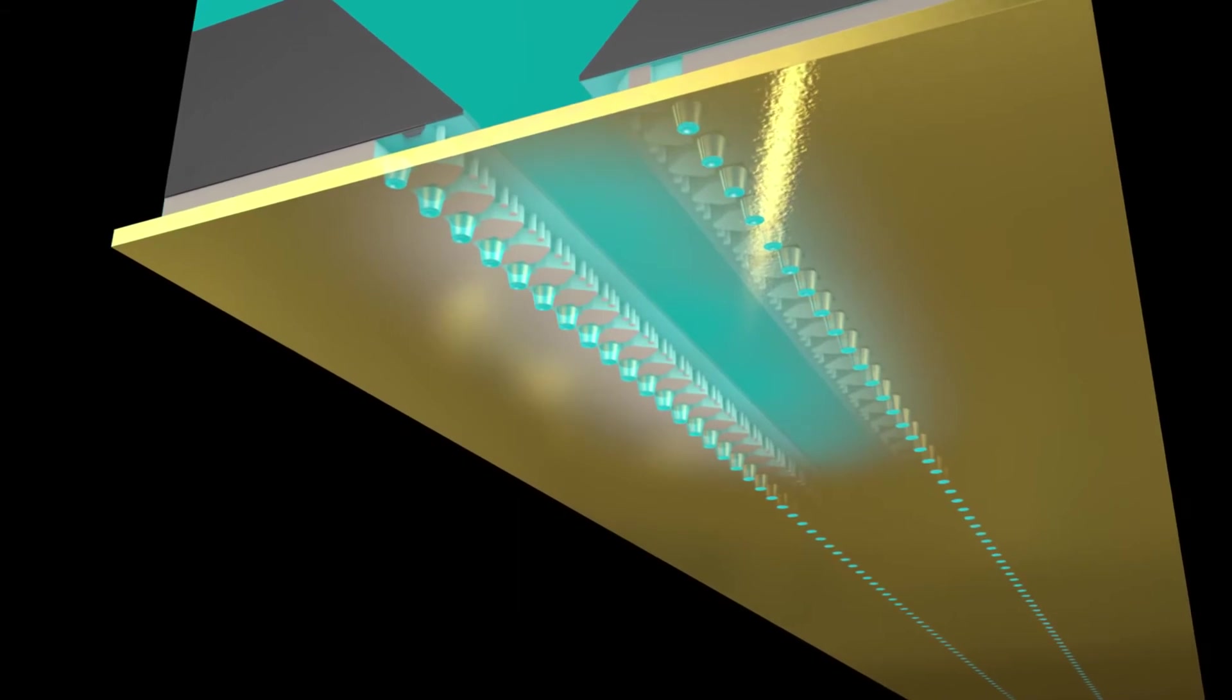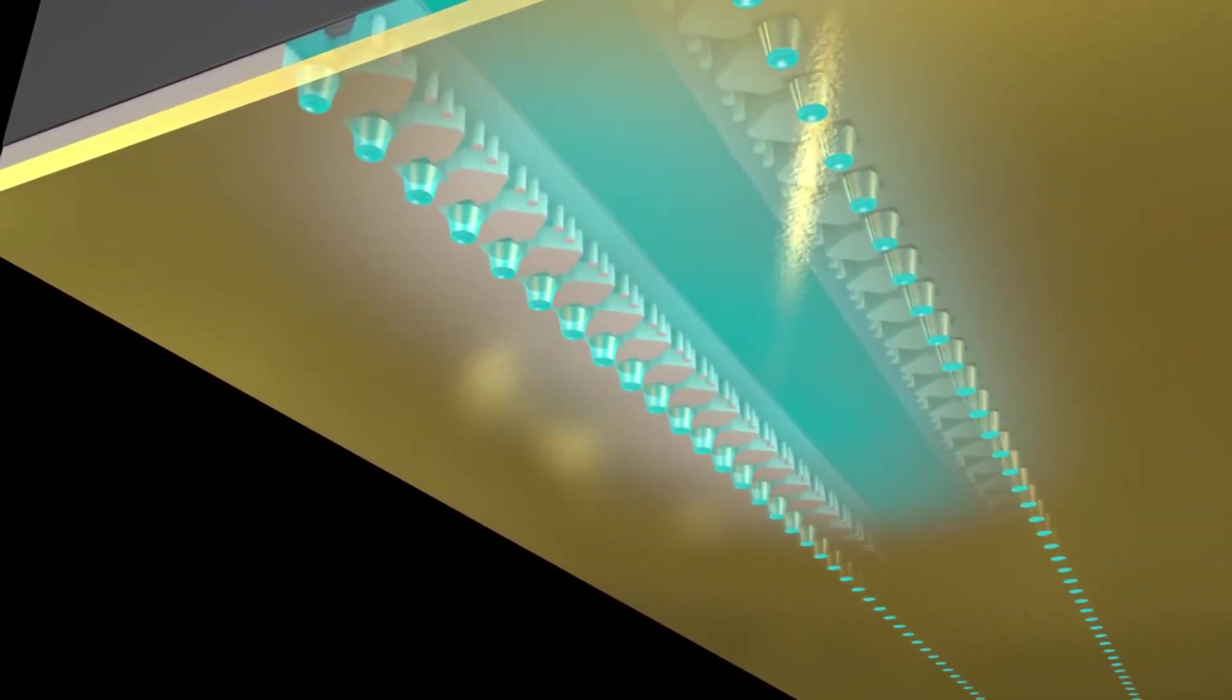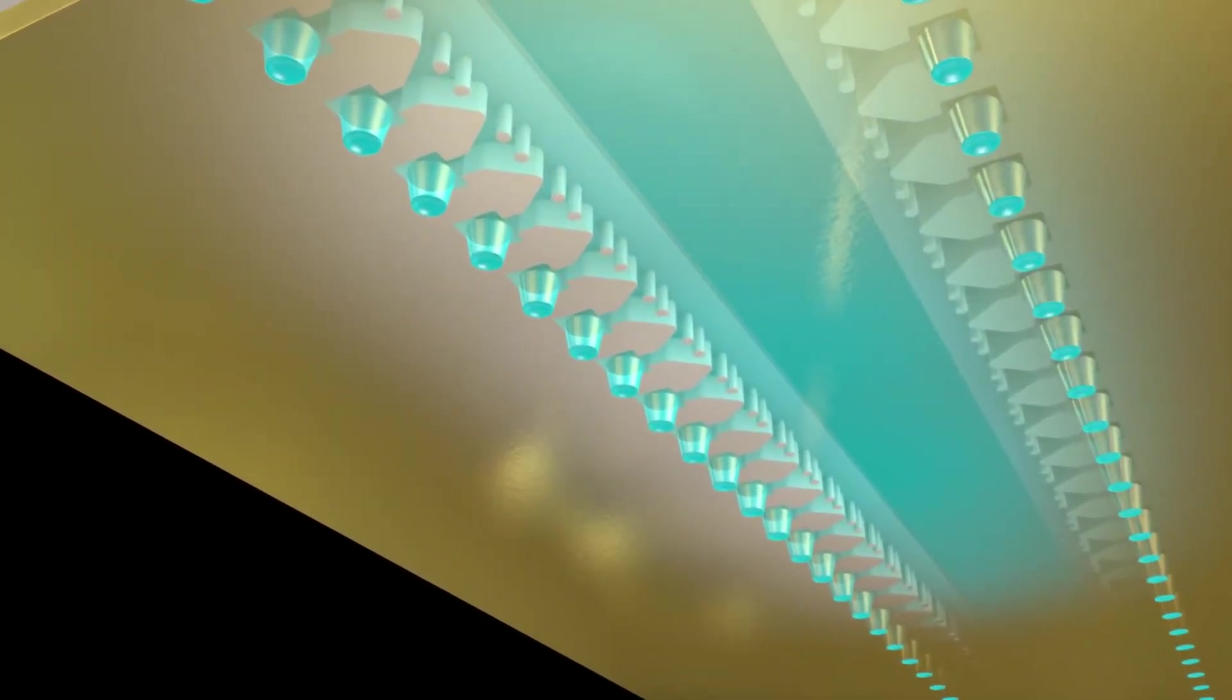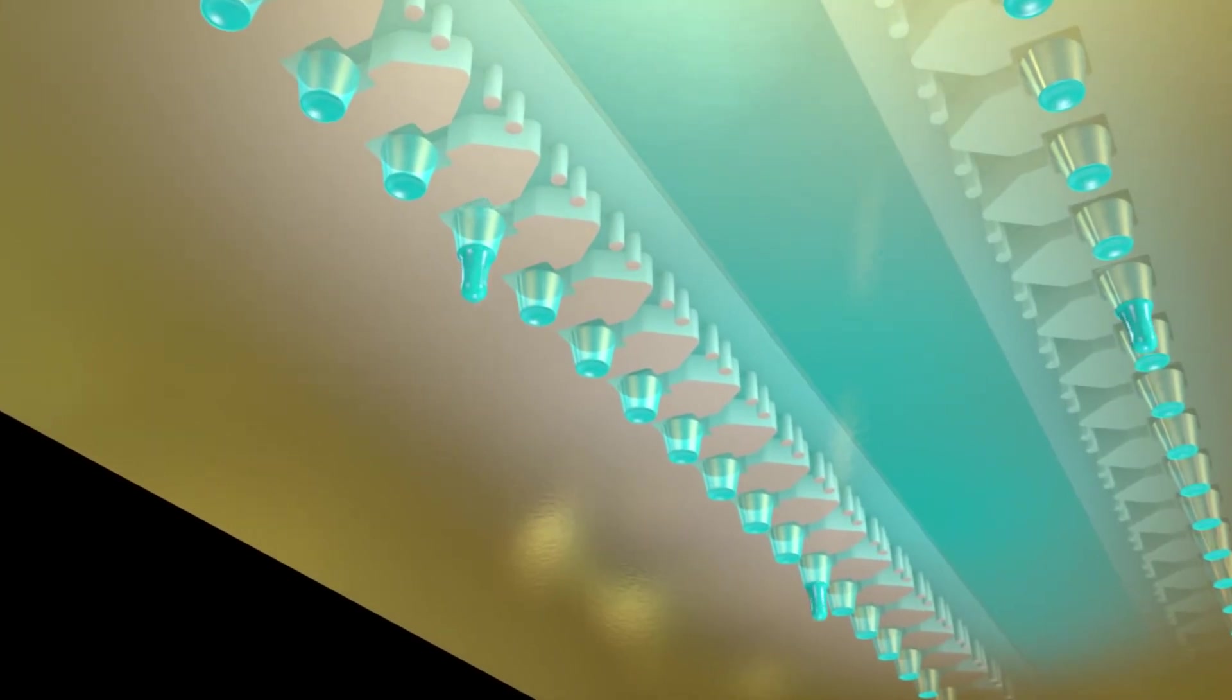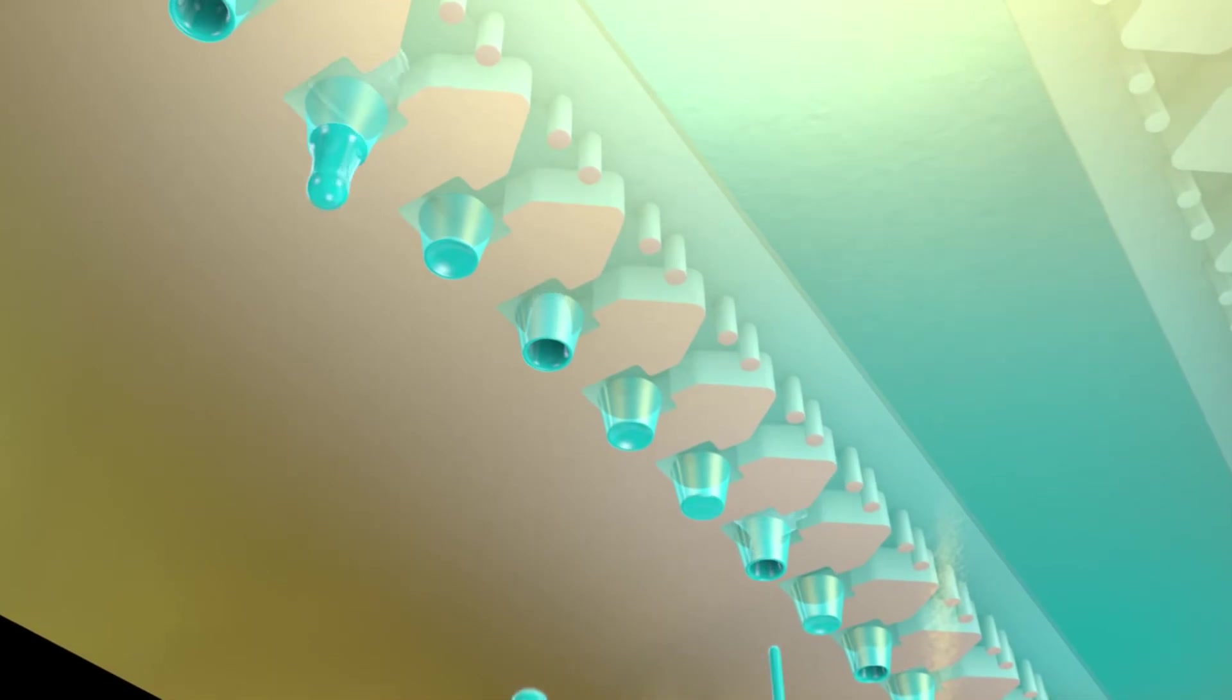HP builds thousands of identical nozzles and chambers on each die. A high-resolution optical process used with light-sensitive polymers produces features with integrated circuit precision. When generating drops, the nozzles in the two columns fire in a sequence that minimizes fluidic interference.